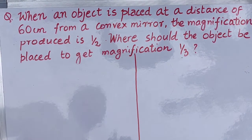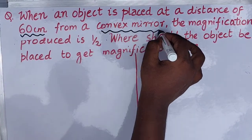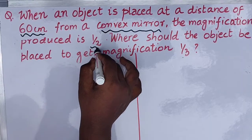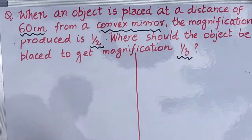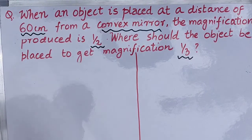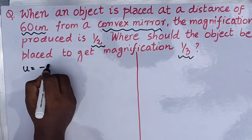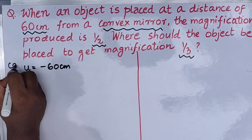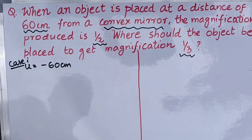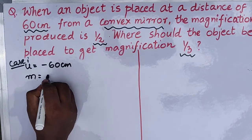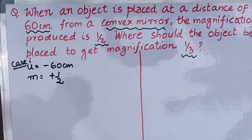In this question, an object is placed at a distance of 60 centimeters in front of a convex mirror. The magnification produced is half. The question is: where should the object be placed to get the magnification 1 by 3? We have the object at minus 60 centimeters — let us take this as case one. The mirror is convex, producing magnification of plus half because it gives a virtual image.